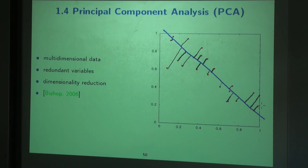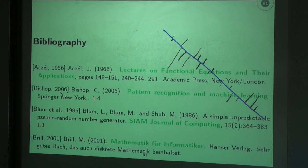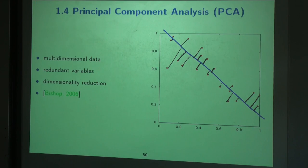So now I'll follow the second approach: we will determine the direction of maximum variance of our data points, following the treatment in the Bishop book — Christopher Bishop's 'Pattern Recognition and Machine Learning' — which is an excellent book available in our Institute library.